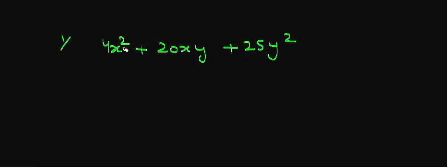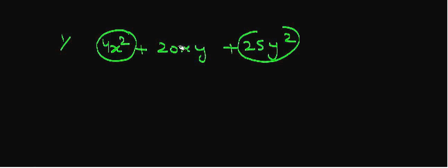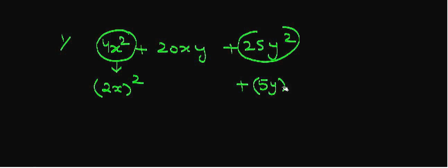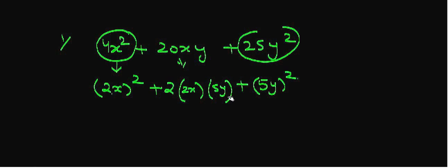This is a trinomial. Two terms of this trinomial must be a perfect square and both are positive. 4x² can be written as (2x)². Similarly, 25y² can be written as (5y)². And this middle term can be written as 2 multiplied by 2x and then 5y.